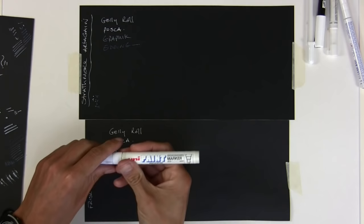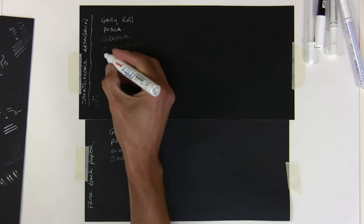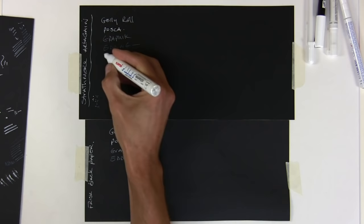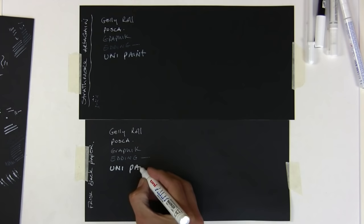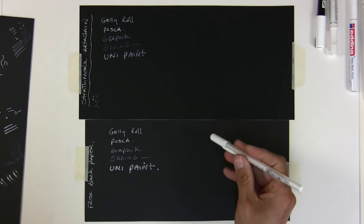The uni paint marker. Now you can get this in a fine tip, but I couldn't see one in my local store, so I've had to get this wide tip. Okay, and that one really, really smells, very much like a car spray.